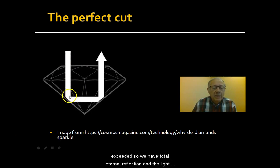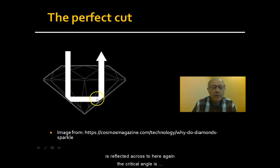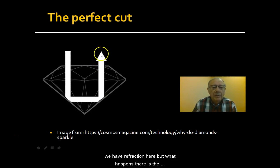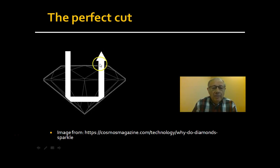When it gets to here the critical angle is exceeded, so we have total internal reflection. The light is then reflected across to here, where again the critical angle is exceeded — so again we have total internal reflection. It passes out here through the surface, and we have refraction, but what happens there is that the wavelength gets longer.